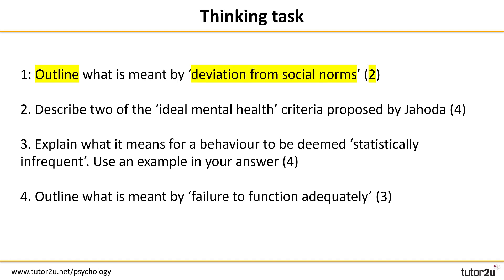When you decoded these questions, hopefully you spotted the command words. 'Outline' tells us we're not evaluating here, and 'deviation from social norms' tells us to select the right information — we're not talking about any other definition. 'Describe two and only two' criteria of ideal mental health is worth four marks, and the word 'describe' tells us this is an AO1 skill — no AO3 will be credited. The word 'explain' tells us we have work to do to earn the four marks available, focusing on statistical infrequency, and a second job is to use an example in your answer. Lastly, 'outline' is our command word again, so we're being tested on AO1 and must focus on failure to function adequately for three marks.